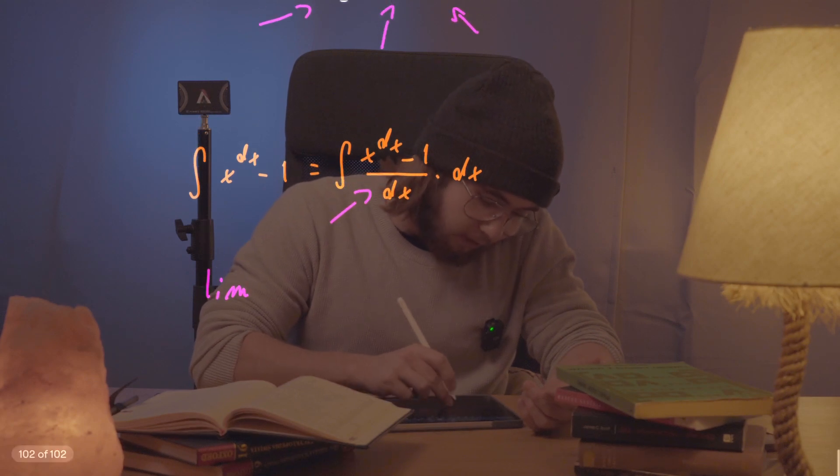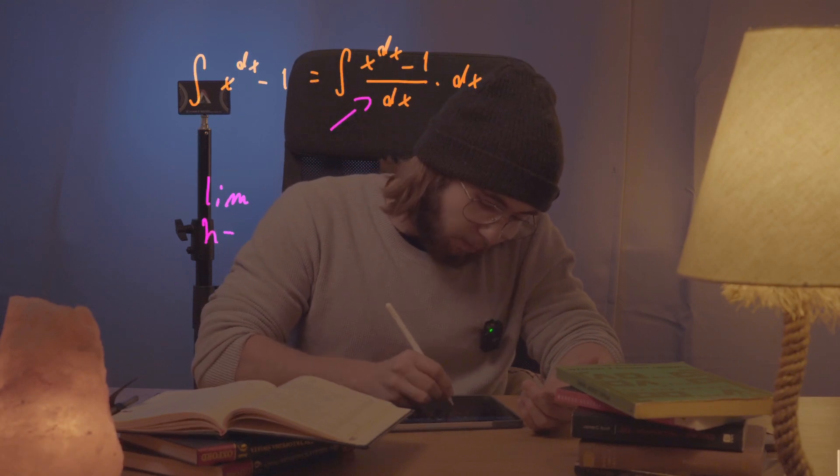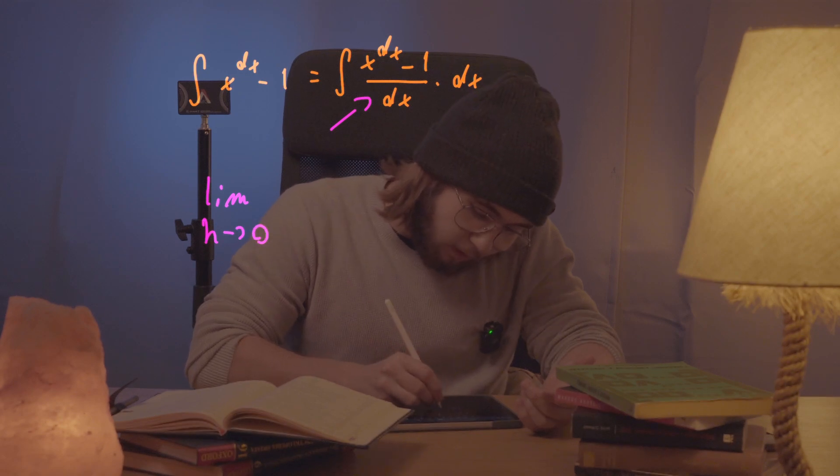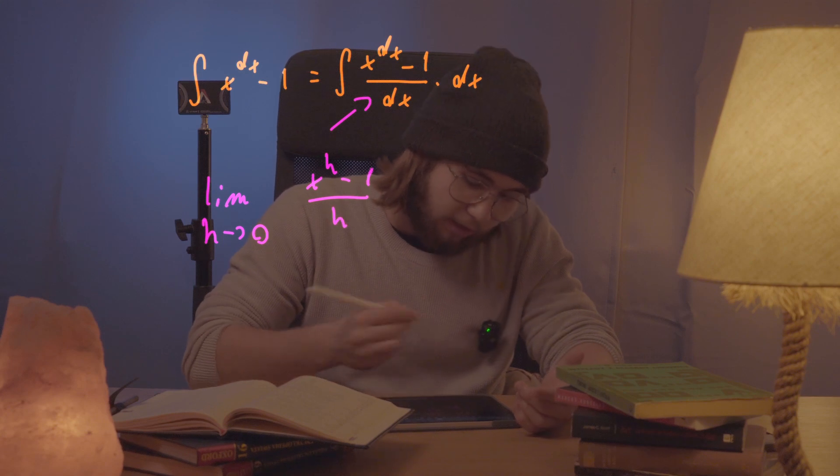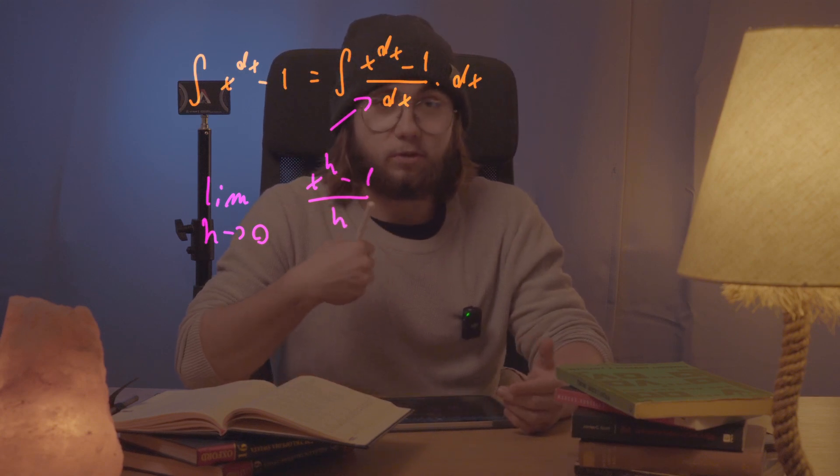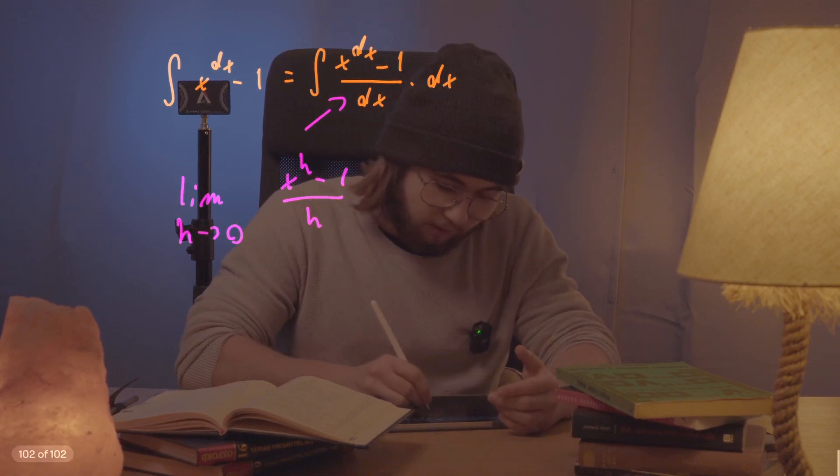So this is going to be a limit as, let's say, some kind of an h approaches zero of x to the power of h minus one all over h, where h is going to represent this dx I had right over here.